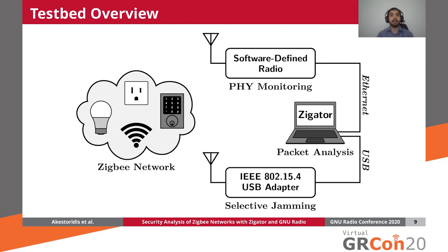To put all these components together, this figure illustrates how we can analyze the security of a given Zigbee network with a software-defined radio, Zigator, and an IEEE 802.15.4 USB adapter. In particular, the software-defined radio is used first to capture Zigbee packets, which we then analyze with Zigator to better understand the nature of that Zigbee traffic. From that analysis, we develop novel selective jamming and spoofing attacks implemented in the framework of an IEEE 802.15.4 USB adapter. Finally, when launching these attacks to validate our insights, we use the software-defined radio to monitor the PHY layer and study the effectiveness of these attacks.